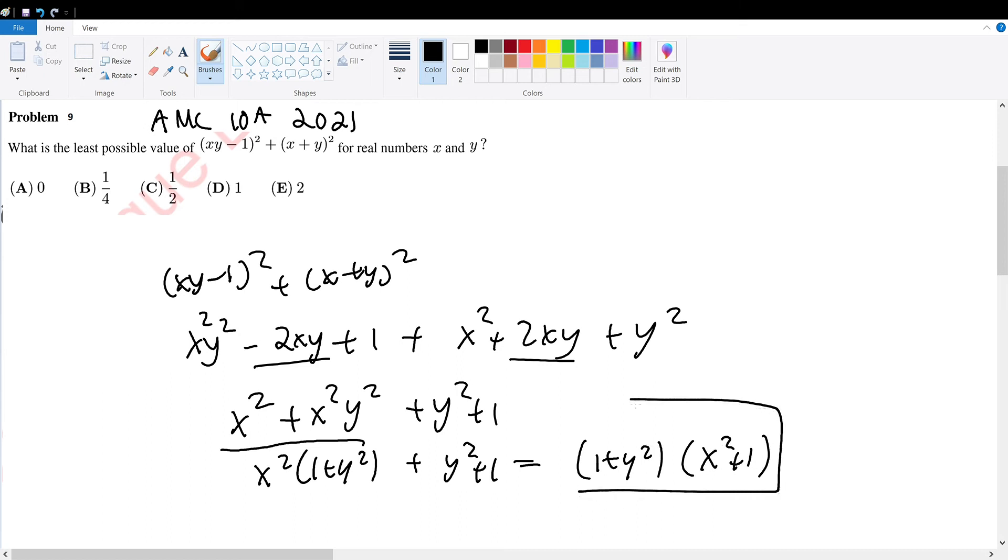Now we're trying to find a minimal value for this, but how can we do this a quicker way?